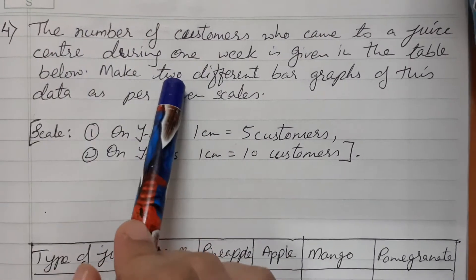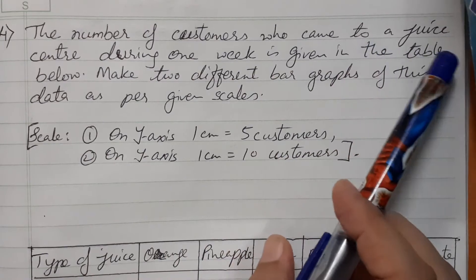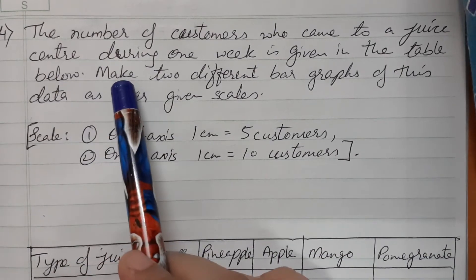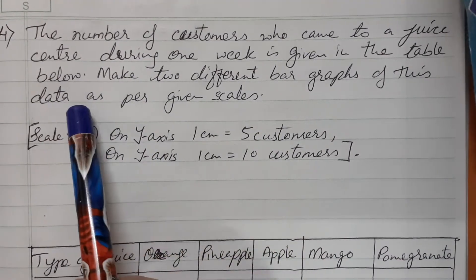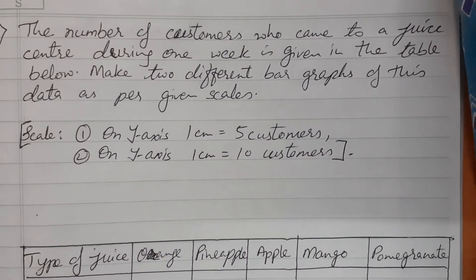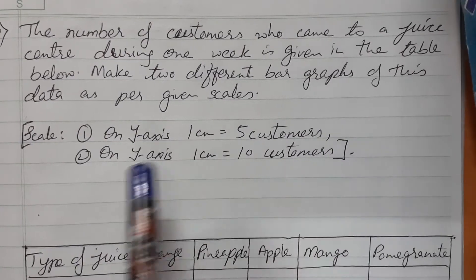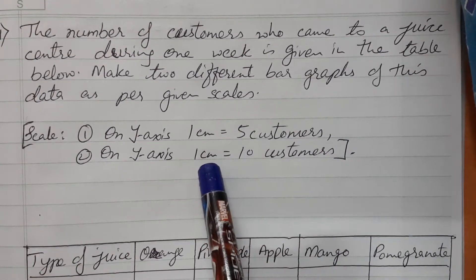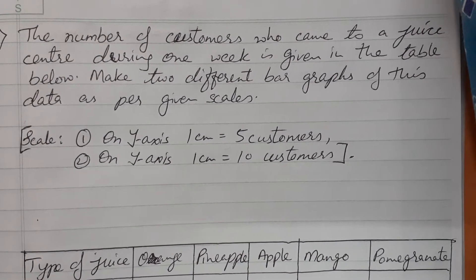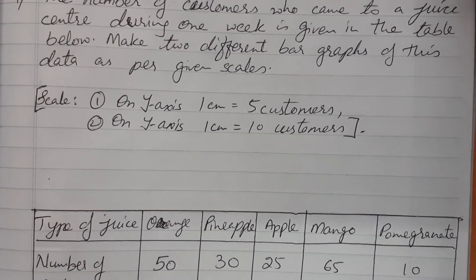The 2nd and 3rd sums I am giving you all as work. The 4th sum: the number of customers who came to a juice center during one week is given in the table. Make two different bar graphs of this data as per the given scales. On the first graph, 1 cm equals 5 customers on the y-axis, and on the second graph, 1 cm equals 10 customers on the y-axis.